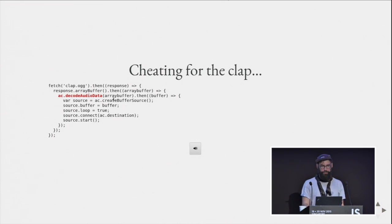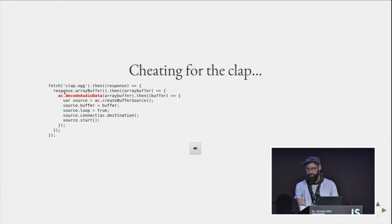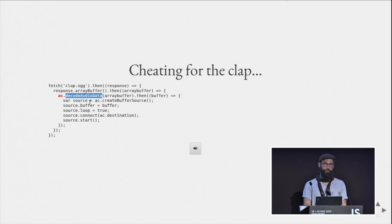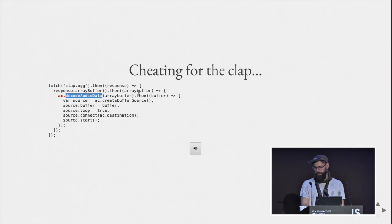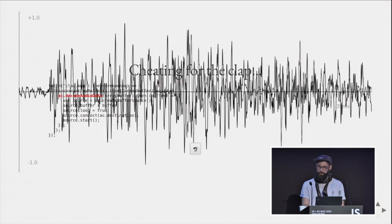I'm using the Fetch API — the new XHR — to fetch an OGG file, because that's the one time I'm cheating and actually sampled the machine. You use decodeAudioData to decode the buffer — it takes the same codecs as the HTML media element. Then it gives you a decoded buffer and you can play it back: get the buffer, set the buffer, set it to loop, connect to the destination, and start it. Just playing back the clap.